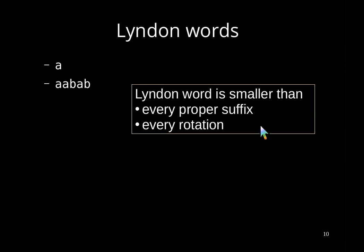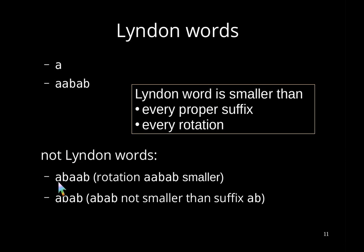For the Lyndon factorization, we need to know what Lyndon words are. For instance, A and AABAB are Lyndon words because, by definition, a word is a Lyndon word if it is lexicographically smaller than every proper suffix, or equivalently, smaller than every rotation. Counter-examples are ABAAB—its rotation AABAB is smaller than it—and ABAB, where the suffix AB is lexicographically smaller than ABAB.